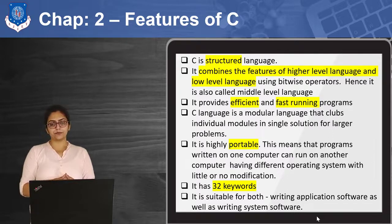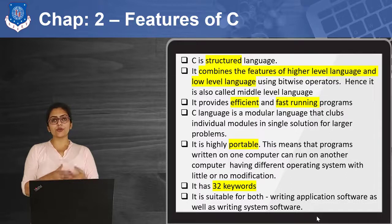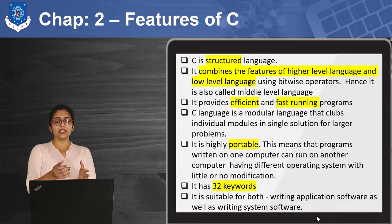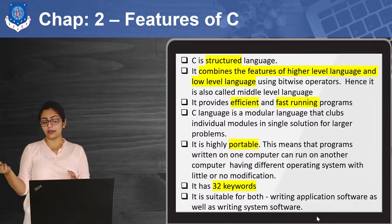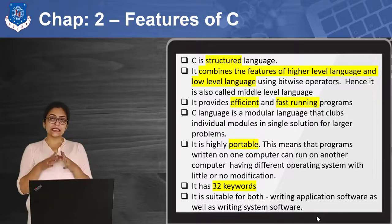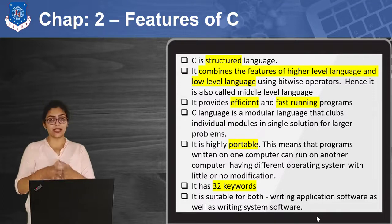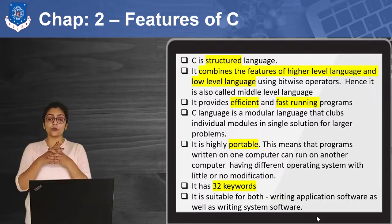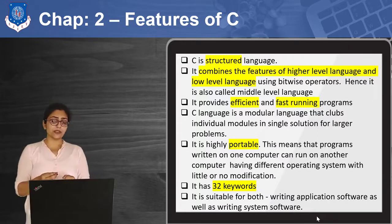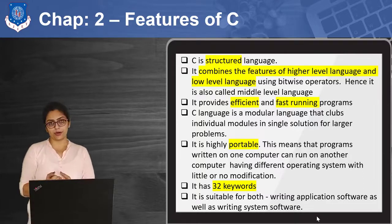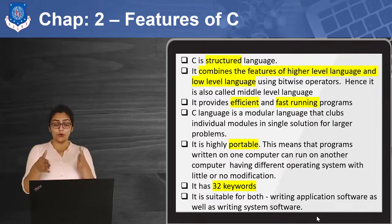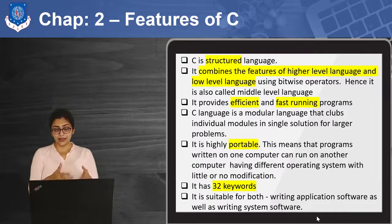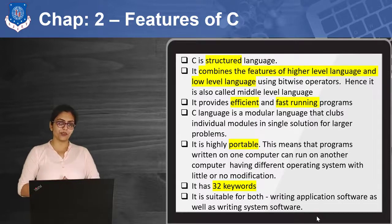C language is really very portable. By portable, I mean that suppose you have written a program on your device, and then you take this program and plug it to another device with a different operating system — with some kind of modification, it will easily run. C is having 32 keywords, which we are going to study in this chapter. Last but not least, you can also write application level programs or system programs in C programming language. You can also make compilers and operating systems in C. So these are the features of C.